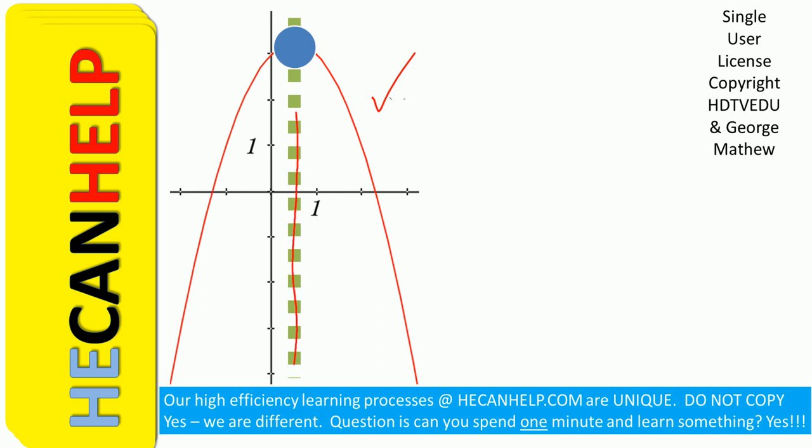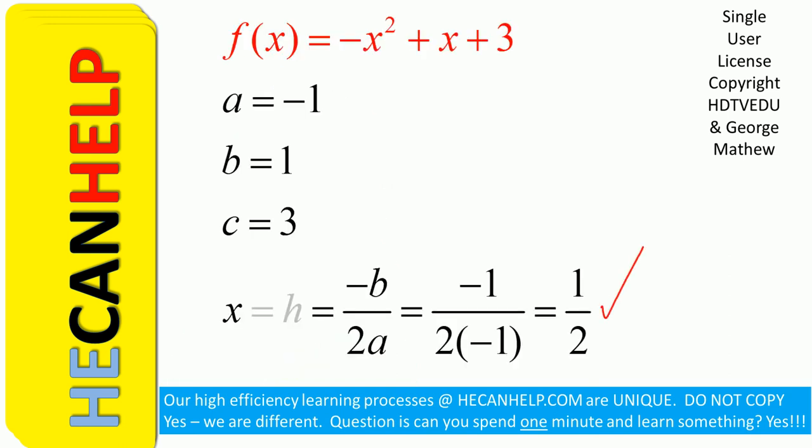So this is your vertical line. And what is that? x = h = 1/2. So h = 1/2.